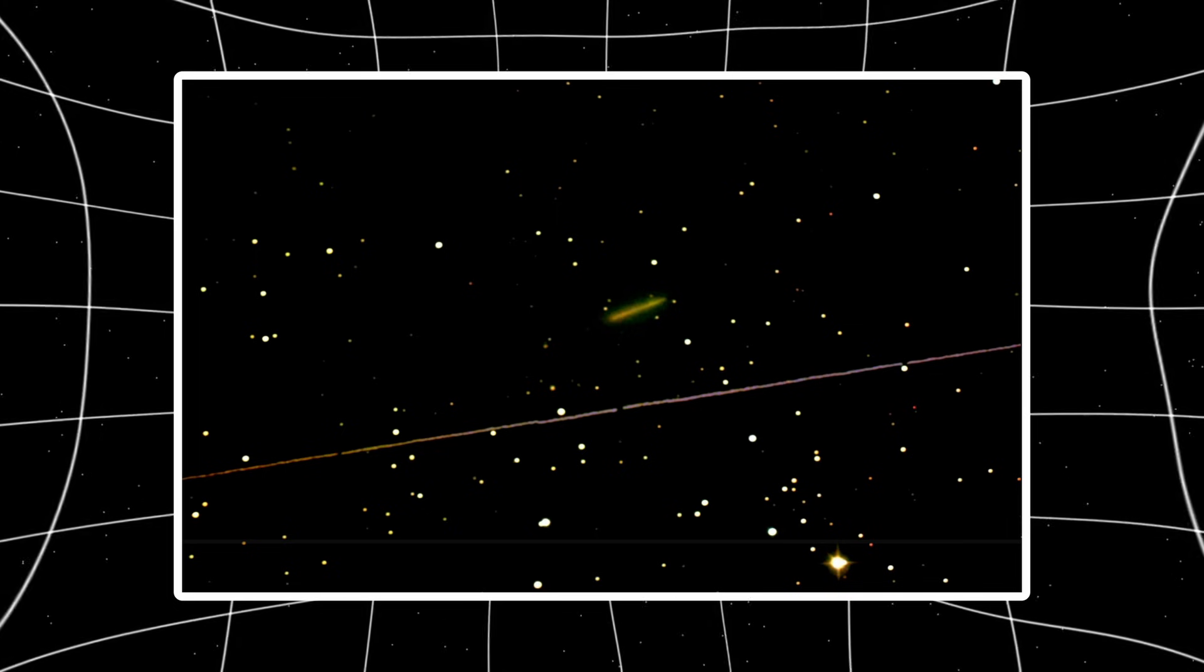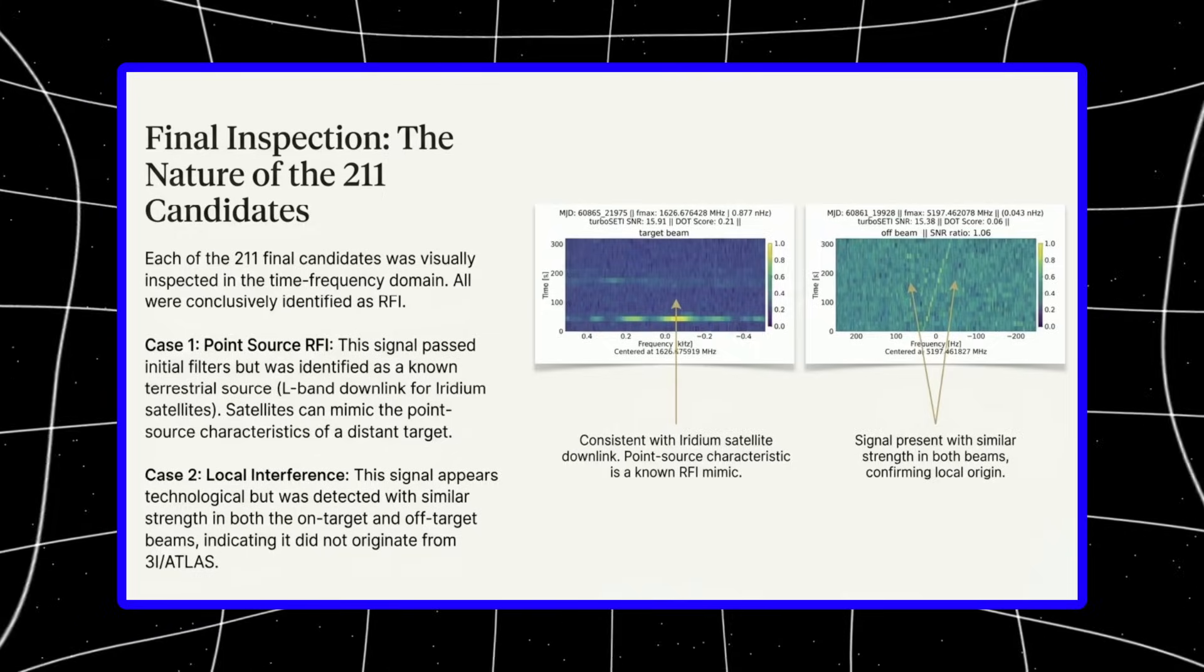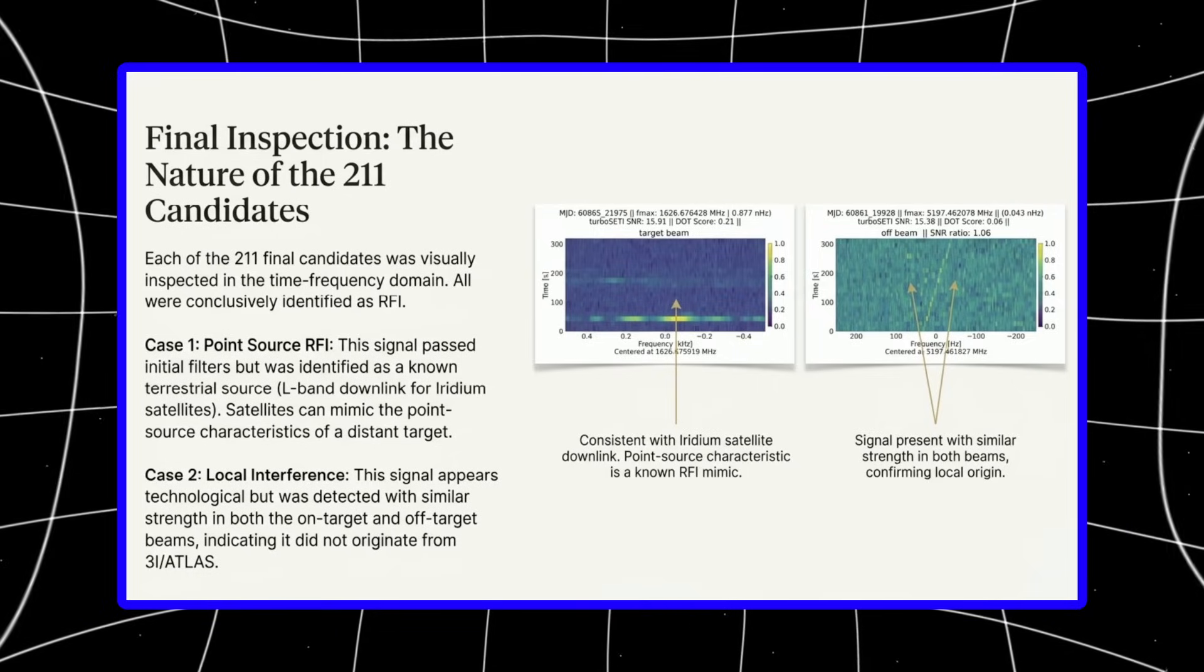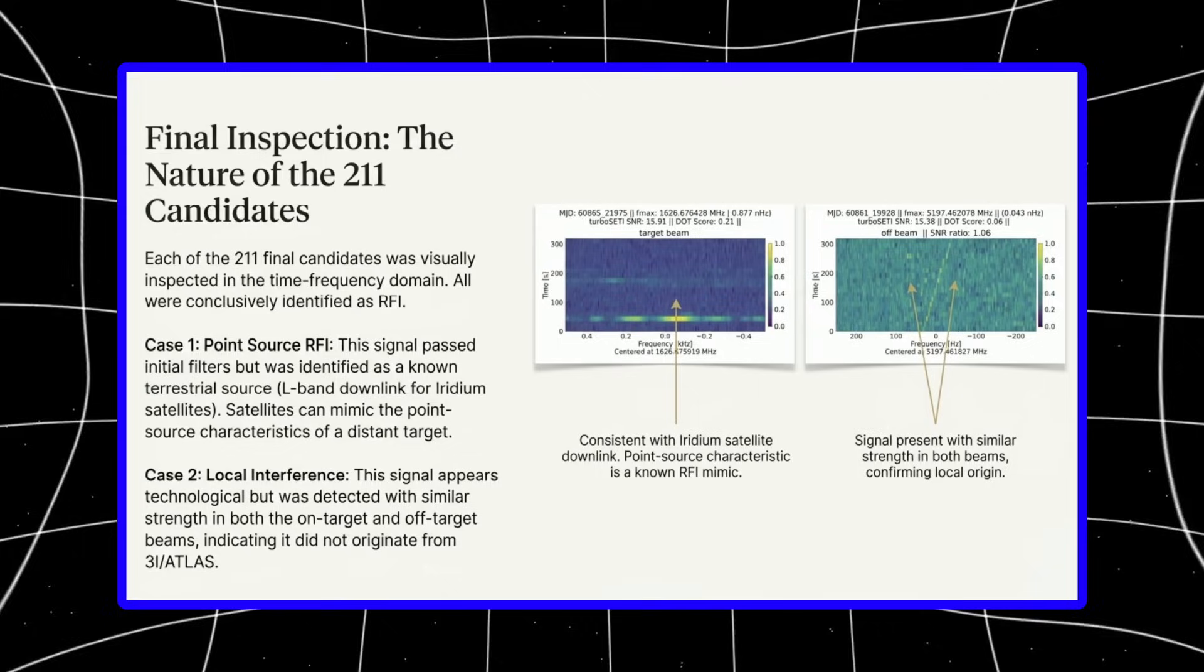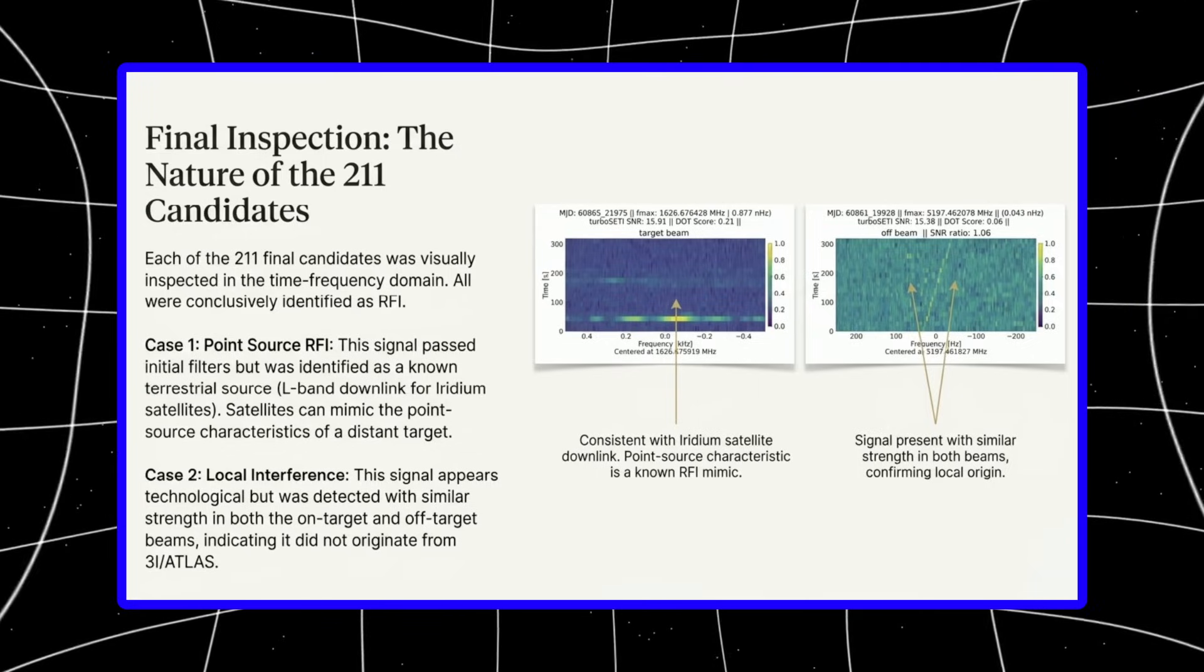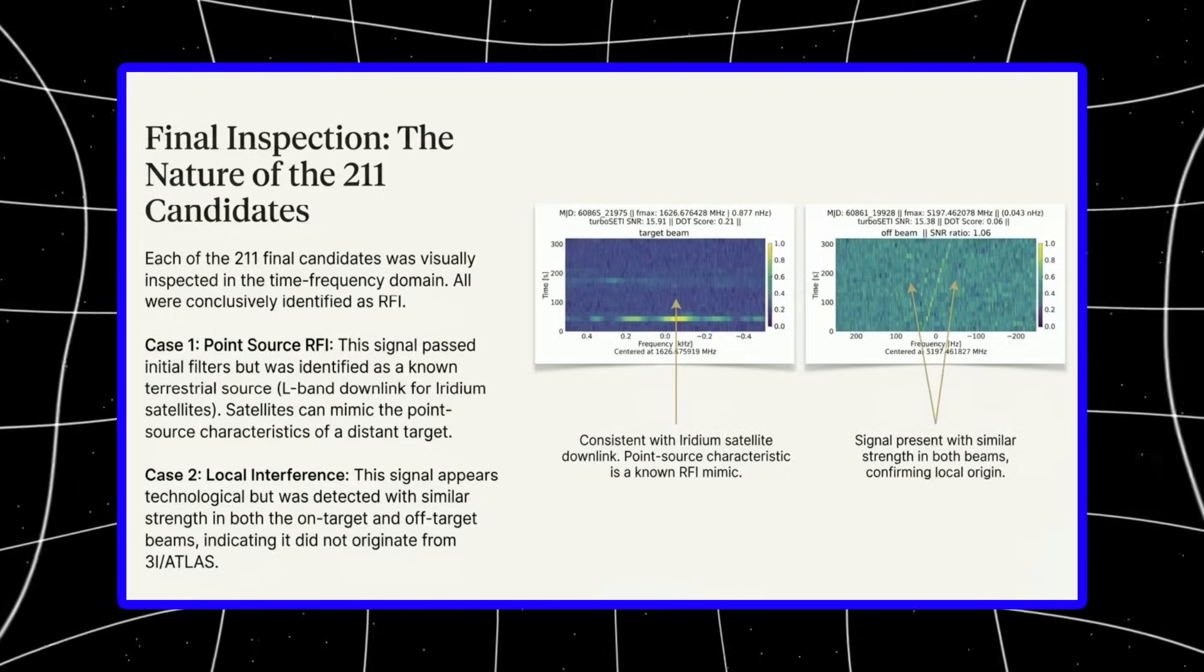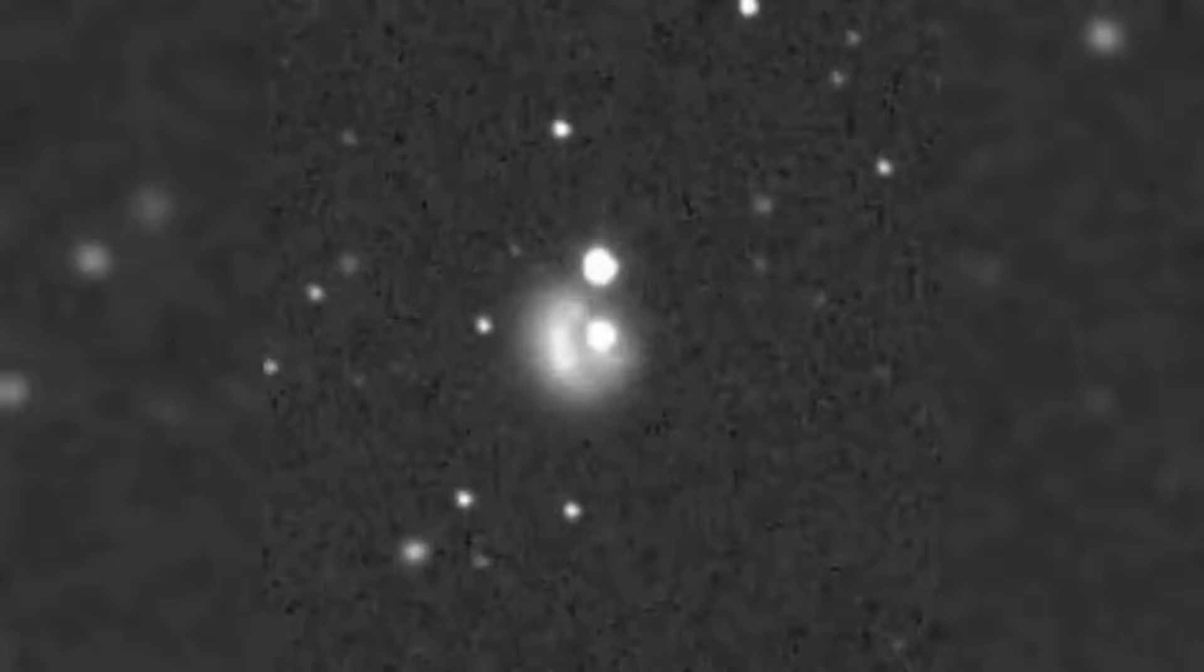Now here's why this matters. When you see them side by side like this, the difference becomes obvious. The satellite is too perfect. Straight line, no variation, machine precision. 3i Atlas is messier. The track shows slight irregularities. The brightness fluctuates. It's moving through space the way natural objects move, responding to forces we can measure but not perfectly predict.